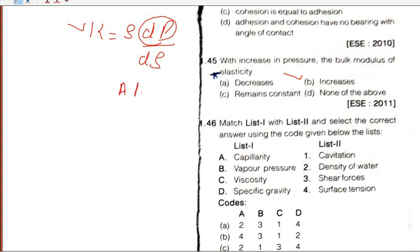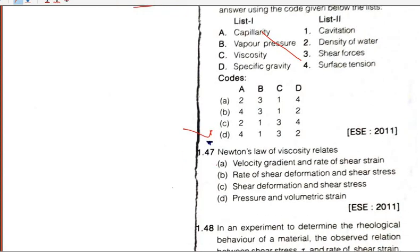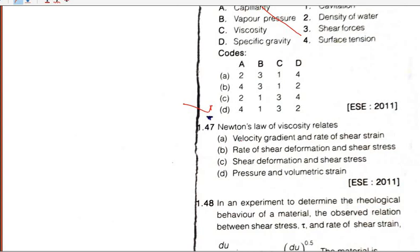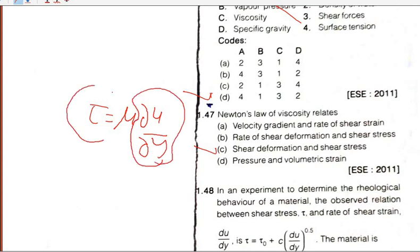Question 46 is about capillarity and related phenomena. This question has been asked multiple times — in 2011, 2002, and one more time — so it is important to study. Newton's law of viscosity relates shear deformation and shear stress: tau = mu × (du/dy). This is the shear stress and shear deformation relationship.